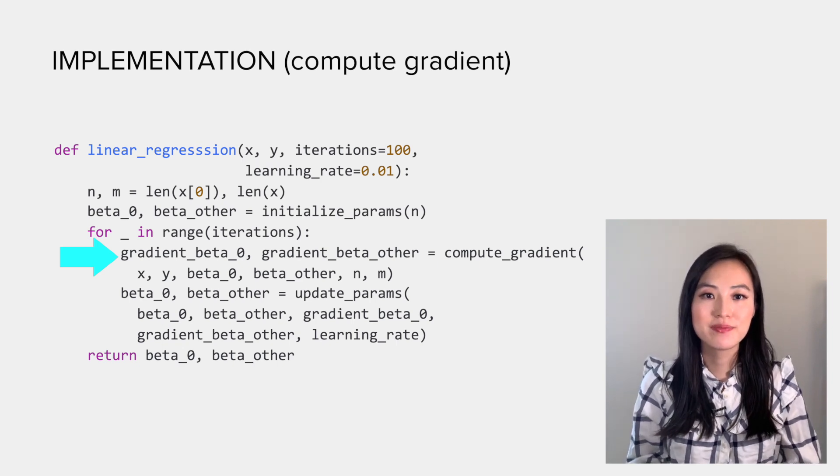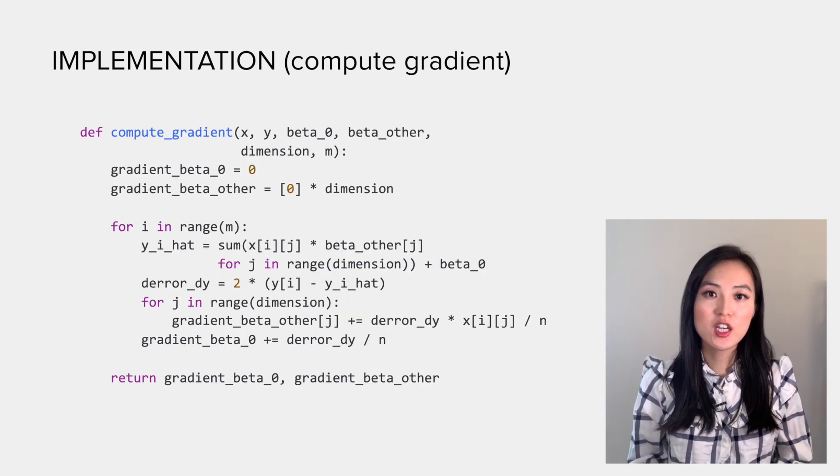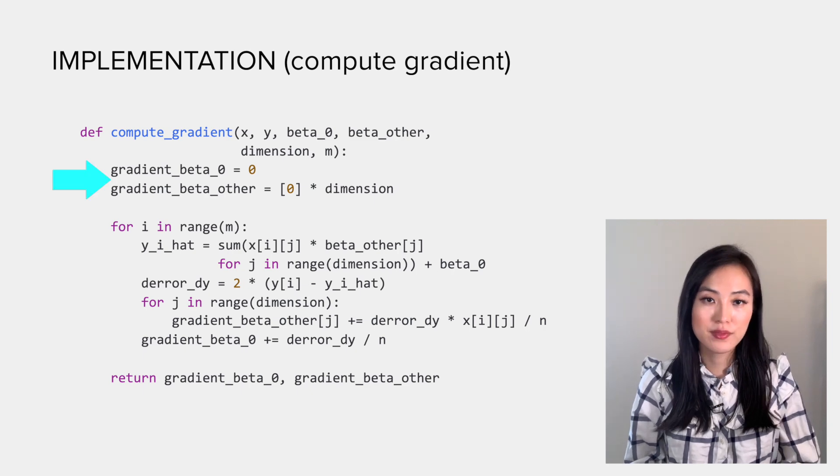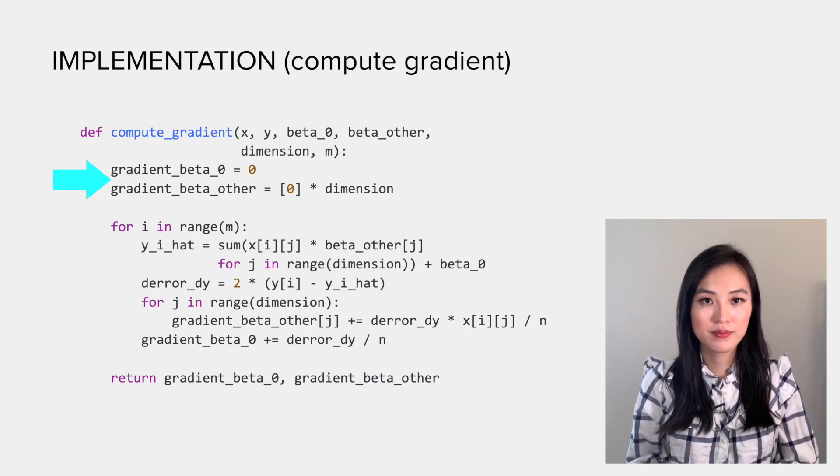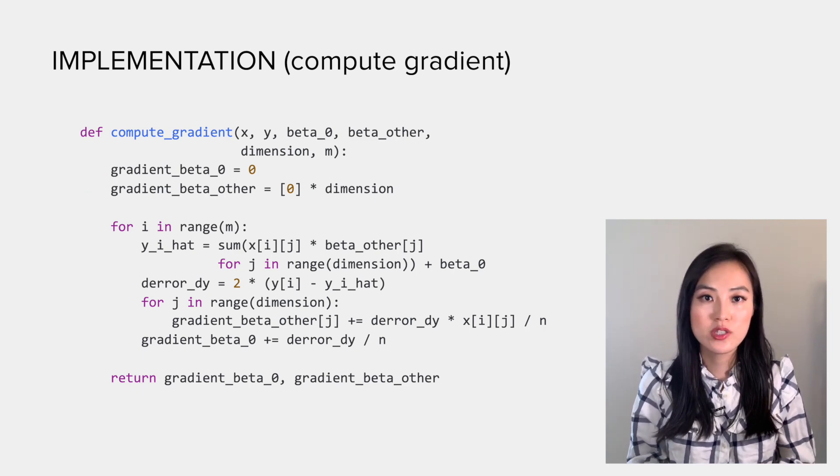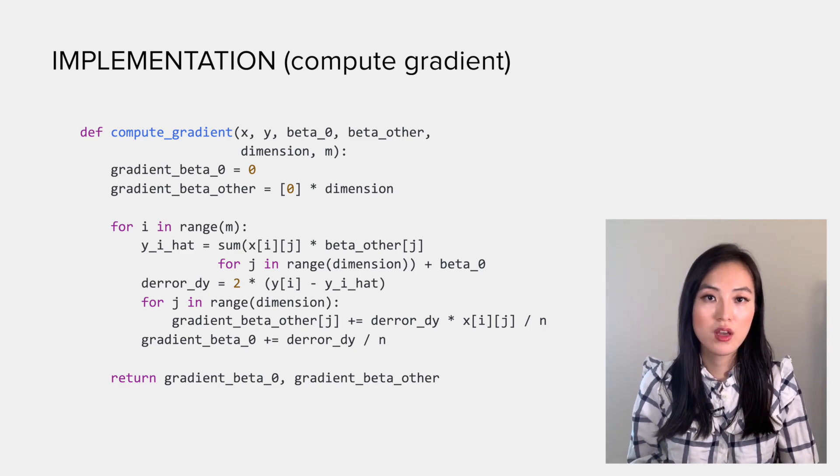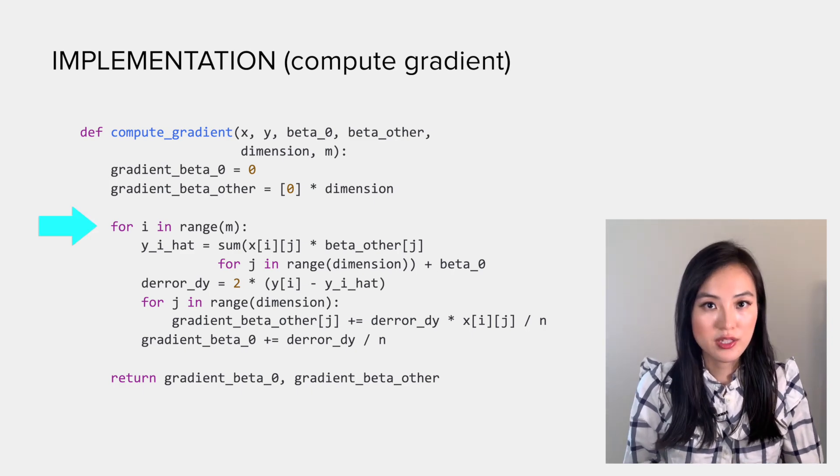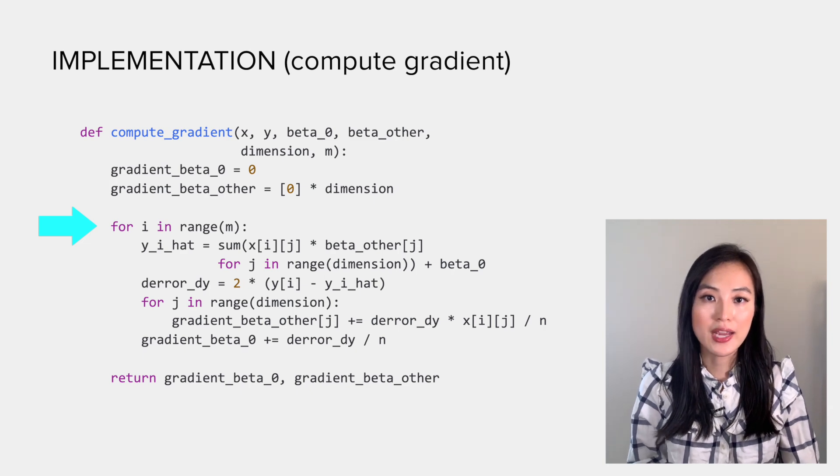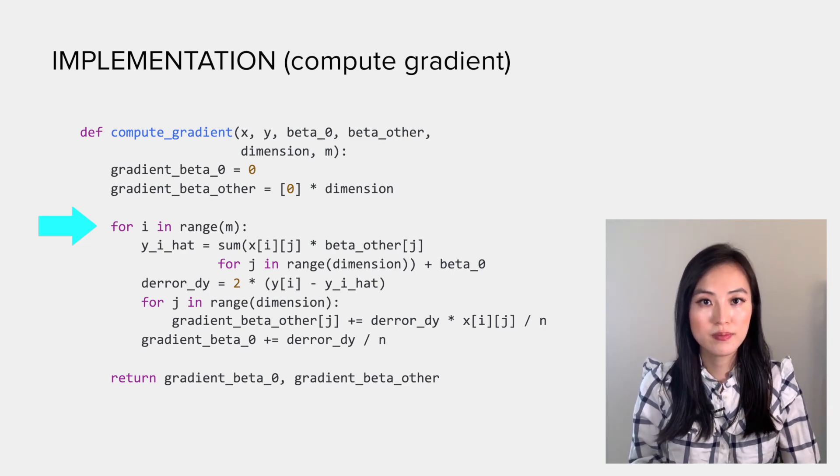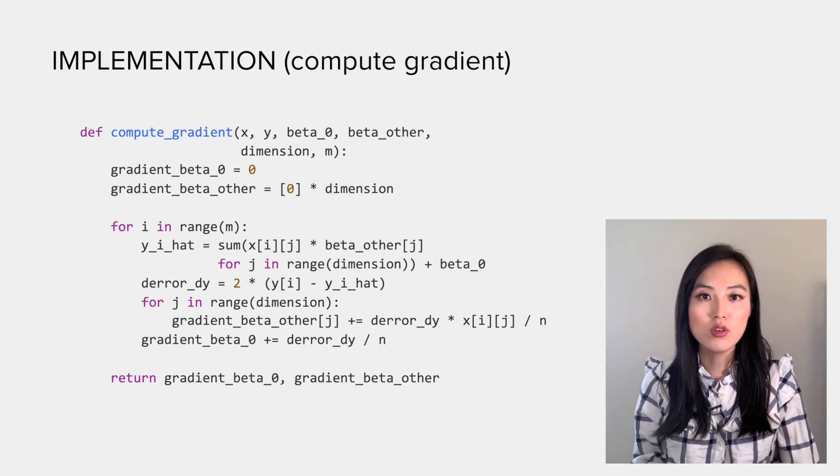Next, it comes to the core of the algorithm: computing the gradient. In this function, we are going to compute the gradients for all betas. All of them start at zero. Again, we treat beta_0 separately because its gradient has a different form than others. We loop through all the data points and add the gradient contributed by each data point to those variables.